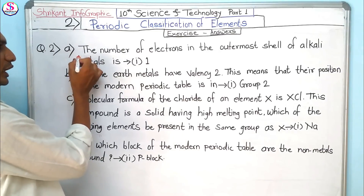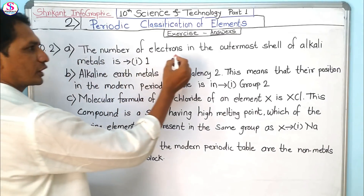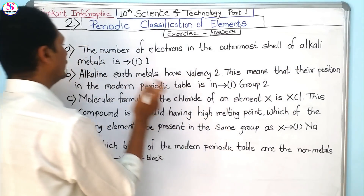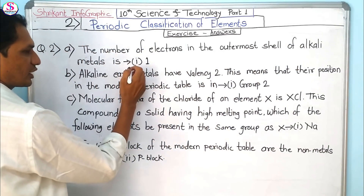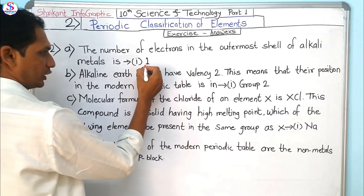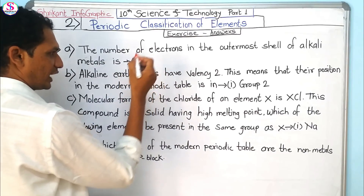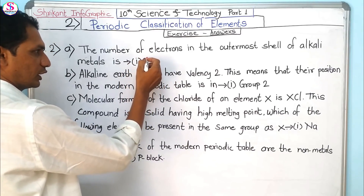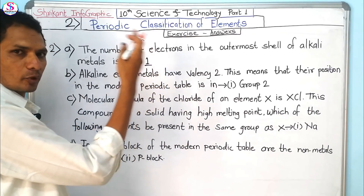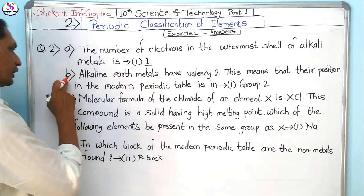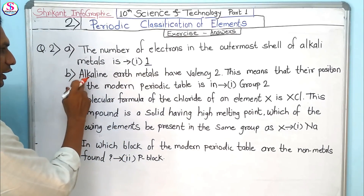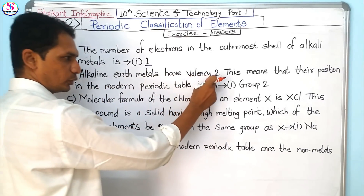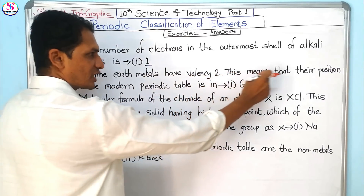Question 2A: The number of electrons in the outermost shell of alkali metals is 1, so the answer is option 1. Examples of alkali metals are lithium and sodium. Question 2B: Alkaline earth metals have valency 2.